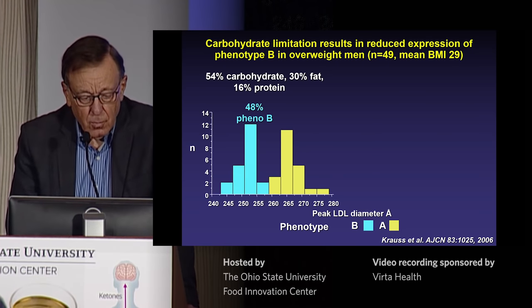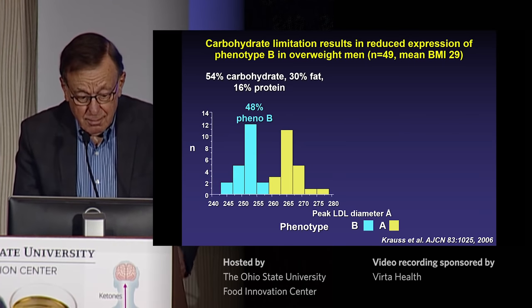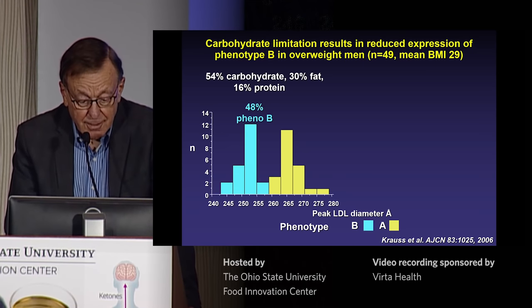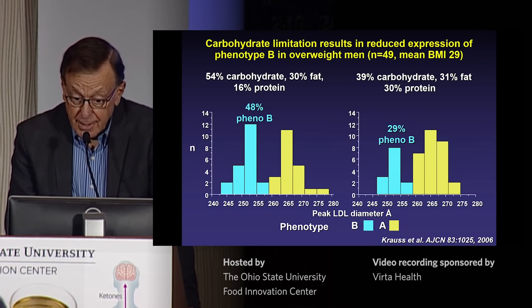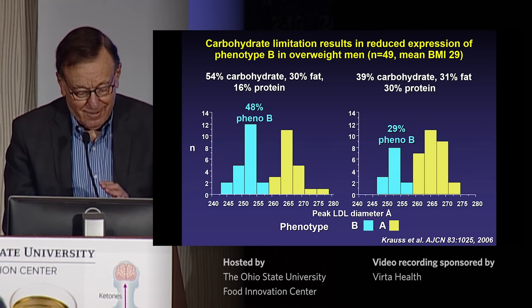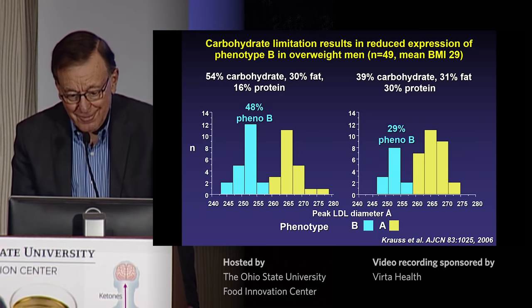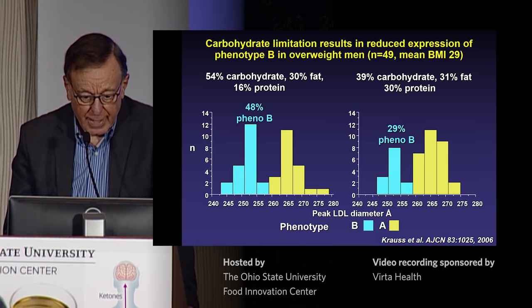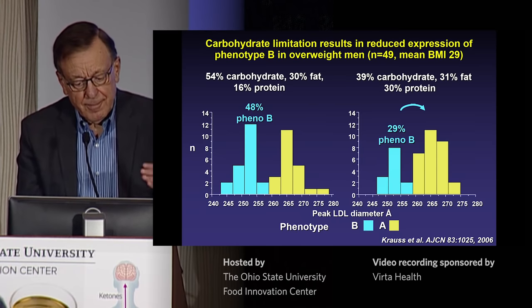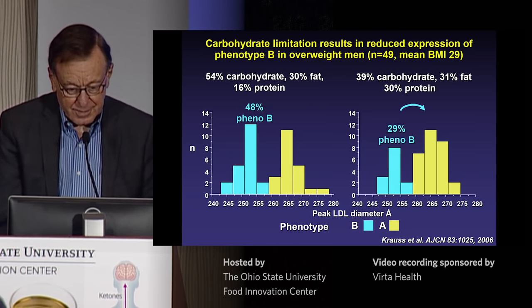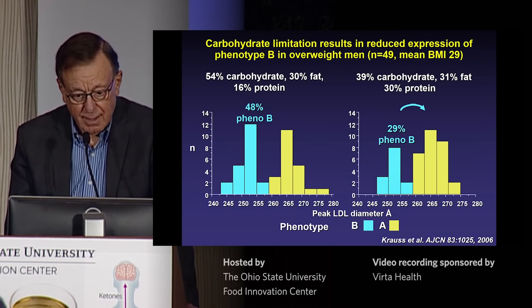We took individuals who were already overweight with a high prevalence of atherogenic dyslipidemia. Their bimodal distribution showed a very large peak for phenotype B — nearly half had phenotype B on their standard diet. When they were switched to a lower-carbohydrate diet — not very low carb, but a switch within the range many people eat normally — we found a dramatic conversion in nearly 40% of the phenotype B individuals. They flipped into the phenotype A profile just by lowering carbohydrate by 15%, keeping fat constant and adjusting protein.